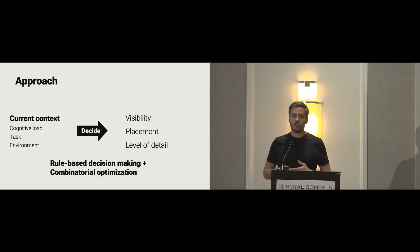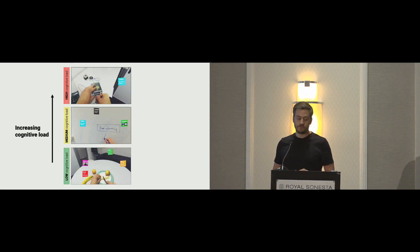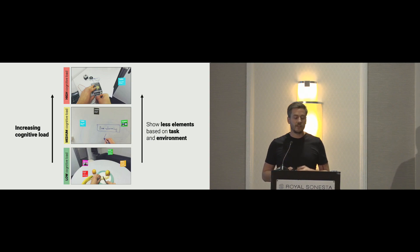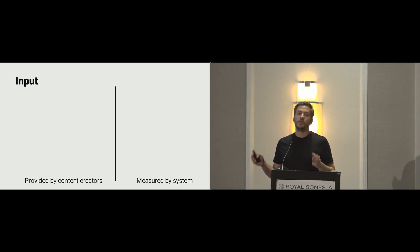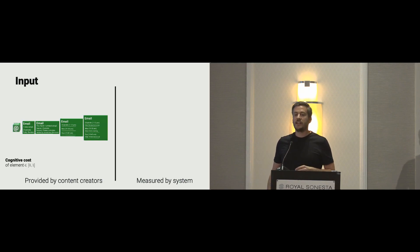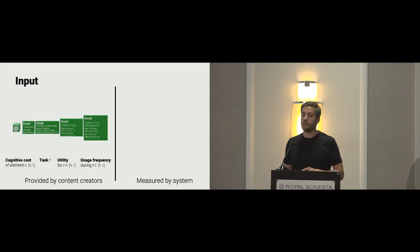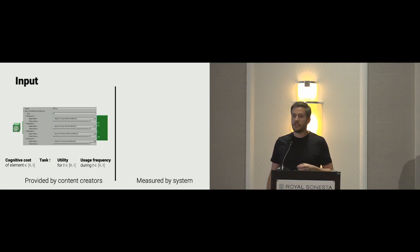We do this with a mix of rule-based decision-making and combinatorial optimization. In essence, if we have an increase in cognitive load, we want to show fewer virtual elements based on the task and environment. We have two main inputs: ones provided by content creators or designers, and others measured live by the system. The content creator provides the applications — for example, the email application — with visually designed levels of detail. They also provide a cognitive cost of an element (how cognitively expensive it is to display), a set of tasks, and for each task the utility of an element and its frequency of use. Currently this is input with simple sliders, but it's feasible to replace this with a data-driven approach.